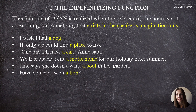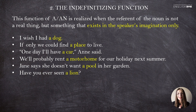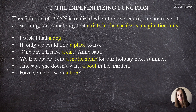'Have you ever seen a lion?' — an animal called a lion. Pay attention to questions like 'Have you ever seen?' 'Have you ever eaten?' 'Have you ever tried?' — these questions about your experience are good illustrations of the indefinitizing function. We speak about something which exists in our imagination, not about a particular lion. When you ask 'Have you ever tried a chicken soup?' you are not talking about a particular bowl of soup but about an imaginary concept.